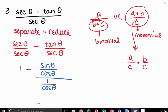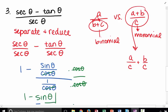And so hopefully you can see what's going to happen now is I can multiply by cosine theta over cosine theta, or you could multiply by the reciprocal. Either way, you should see that you get sine theta over 1. And so the original fraction reduces to 1 minus sine theta.